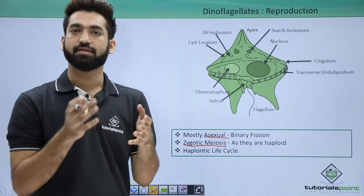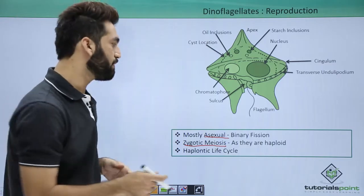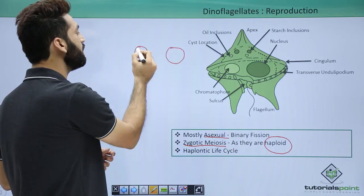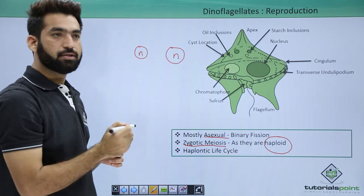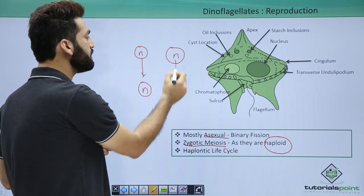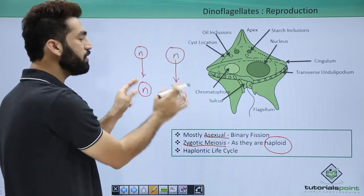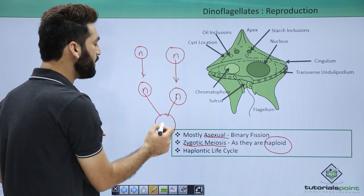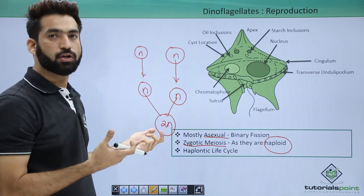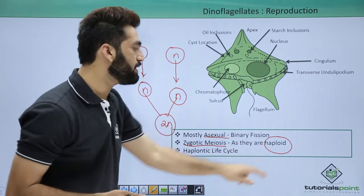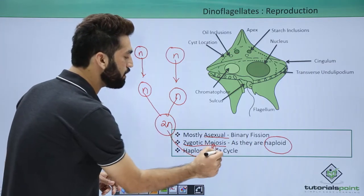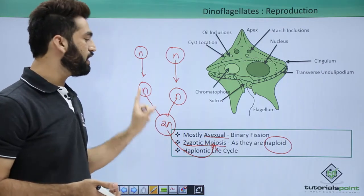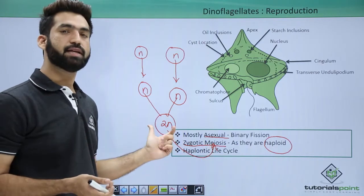There are two concepts to know: zygotic meiosis and gametic meiosis. Dinoflagellates are basically haploid. When two haploid dinoflagellates produce gametes, the gametes are also haploid and are formed by mitosis. When two gametes fuse, the resulting zygote becomes diploid. Since protist members must remain haploid, the zygote must undergo meiosis — this is why it is called zygotic meiosis. The zygote undergoes meiosis to restore the haploid state.